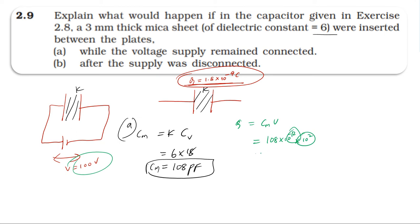This is the second case: battery disconnected. Battery removed, charge is constant. Q = 1.8×10^-9 coulomb. Second case capacitance is 108 picofarad. Answer.